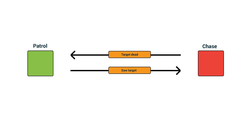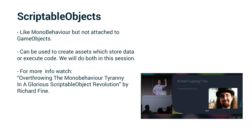The system we're going to build today is what we'll call a pluggable AI, and we'll build it using scriptable objects. Scriptable objects allow us to create scripts similar to mono behaviors but are not components attached to game objects. Instead, we create assets out of them and store them in our project. They can be used to store data or code as an asset. For an excellent primer on scriptable objects, I highly recommend Richard Fien's talk, called 'Overthrowing the Mono Behavior Tyranny in a Glorious Scriptable Object Revolution' from Unite LA. This session is inspired by the pluggable AI example he showed on stage, which you can download if you want to see another implementation of this concept.